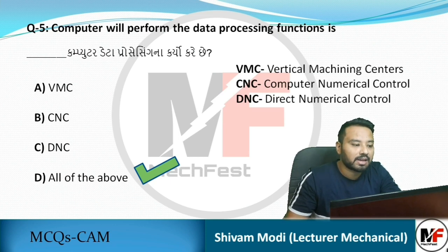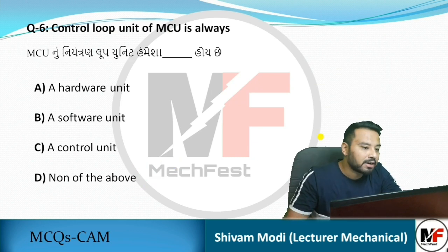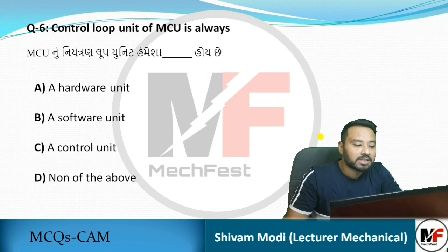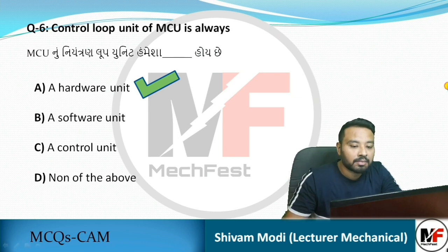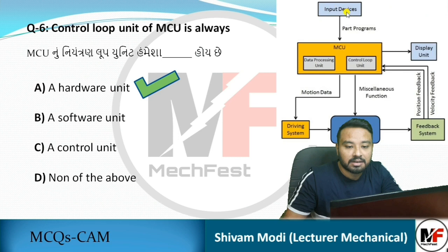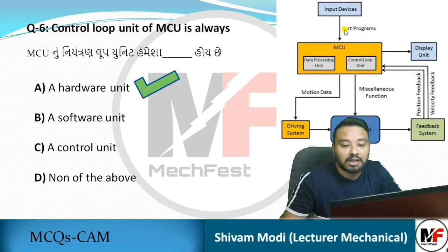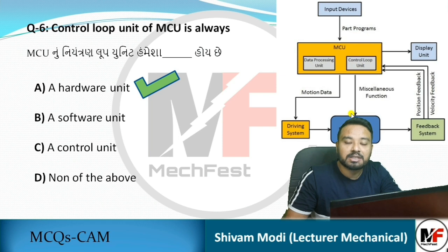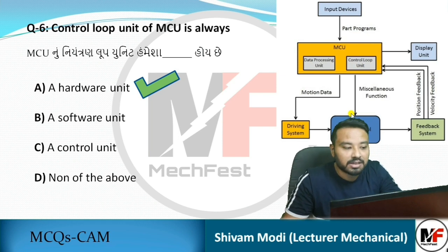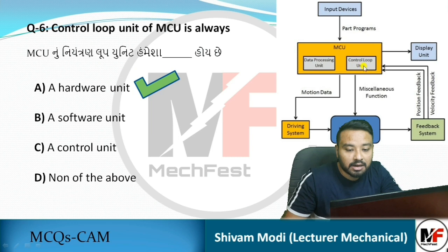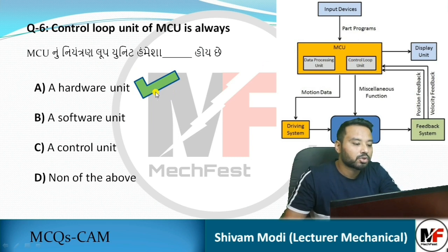Next MCQ: The control loop unit of MCU is always a what? The answer is a hardware unit. The difference between hardware and software: the part program is entered as input into the CNC machine, the machine control unit analyzes that data and gives instructions to the machine tool, and the machine works accordingly. So the control loop unit of the MCU is a hardware unit.